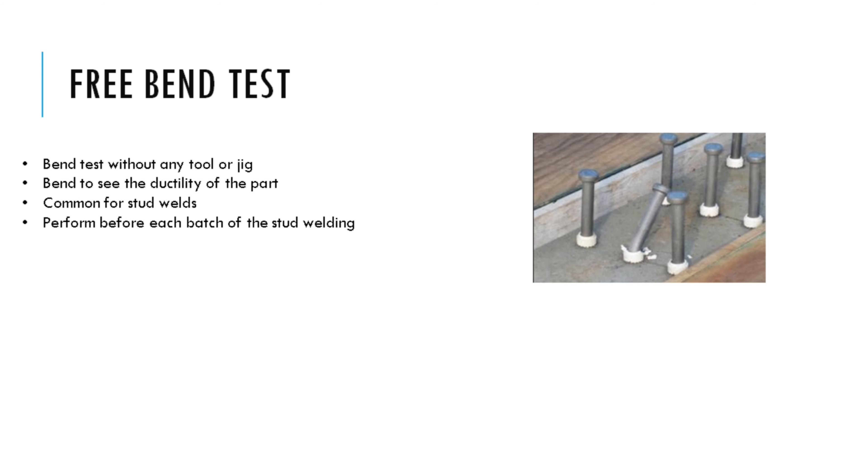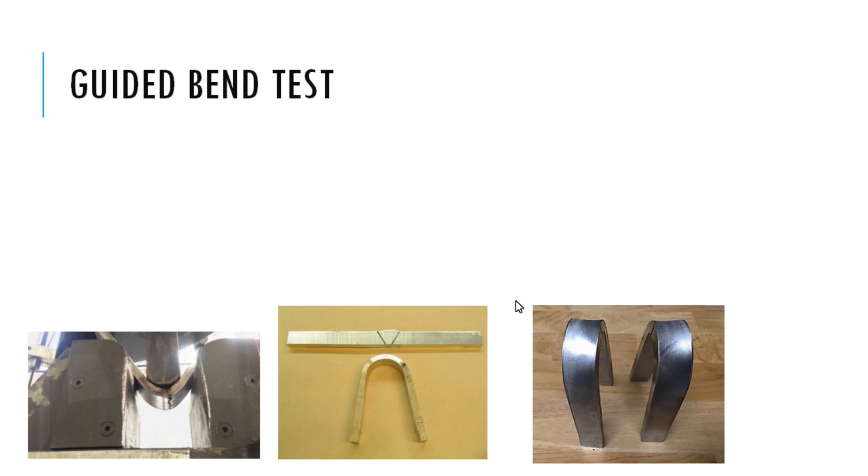The first destructive test is the free bend test. It is very popular and common in stud welding. This bend test is done without any tool or jig. The main purpose is to assess the ductility of the part. Because of weathering conditions or base metal temperature, studs sometimes don't get proper penetration at the joint, which is one reason studs fail. During production, before welding any specific batch, this free bend test is performed, and once 3 or 5 studs pass inspection, the production studs are installed.